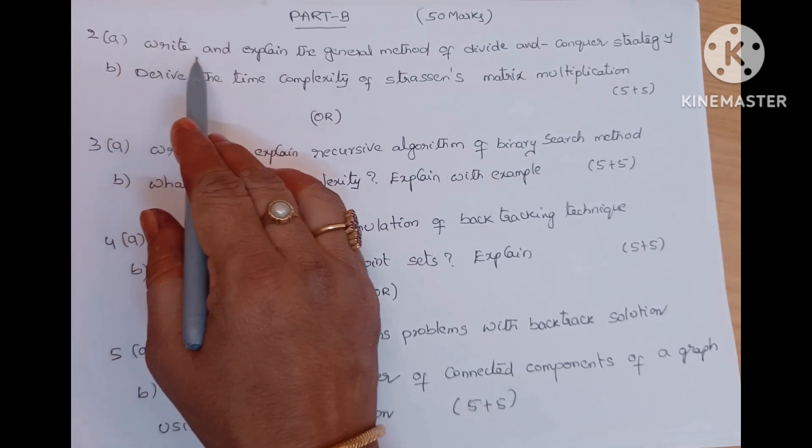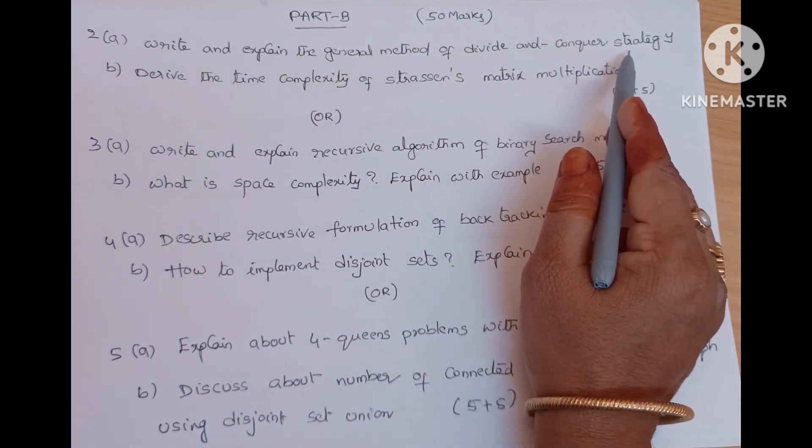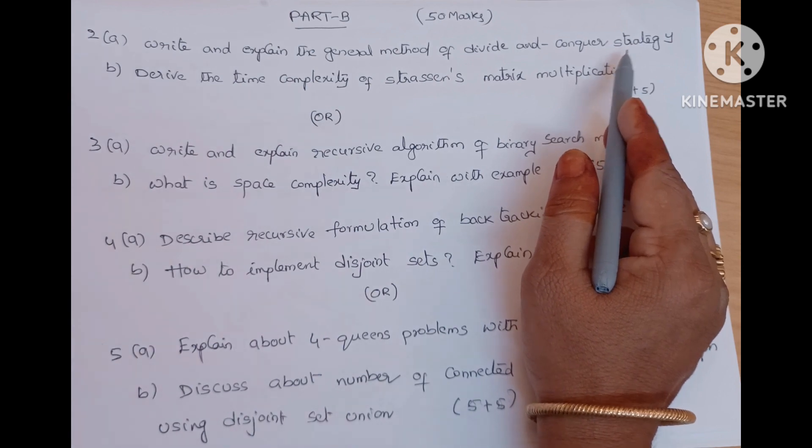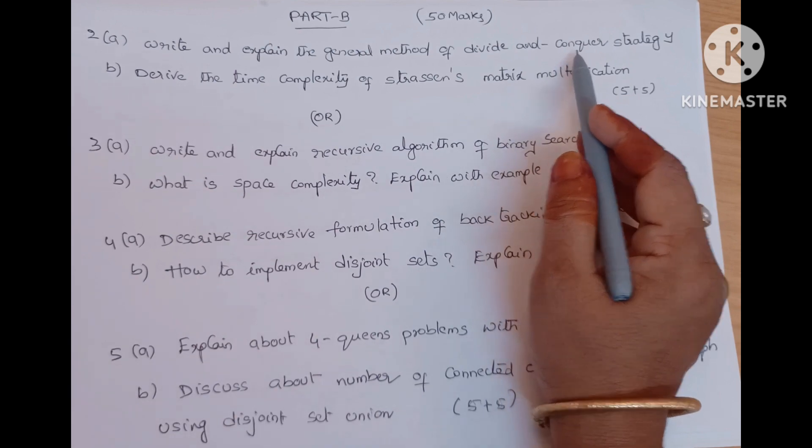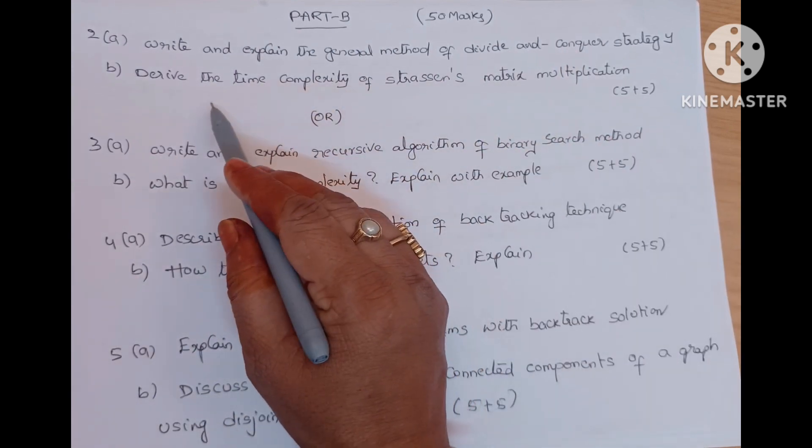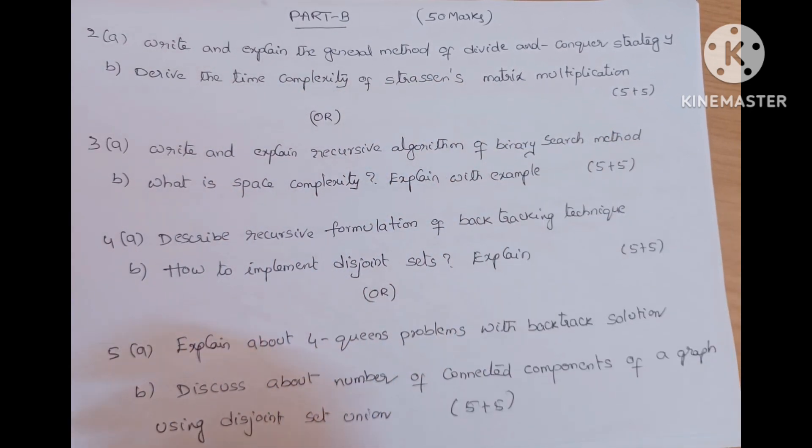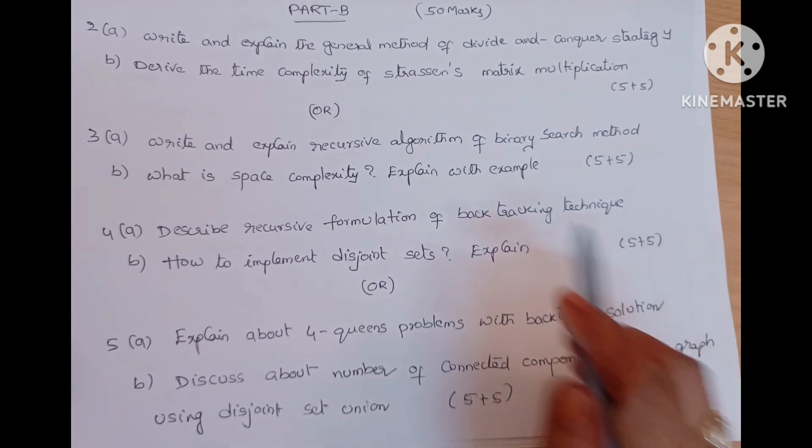Two A is write and explain the general method of divide and conquer strategy. Divide and conquer strategy means either you go for merge sort is an example, quick sort is also an example for divide and conquer method. Explain with an example, five marks. B is derive the time complexity of Strassen's matrix multiplication, five marks question.